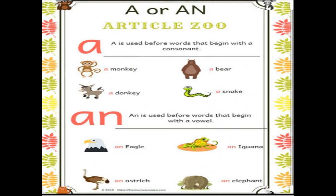A is used before words that begin with a consonant — means jis spelling ka pehla letter consonant ho, usse pehle hum A lagate hain. For example, 'monkey' ka pehla letter M hai, aur M consonant hai, isliye usse pehle hum A lagaenge — a monkey. Isi tarah, beer, donkey, and snack ki spelling ka pehla letter consonant hai, isliye usse pehle bhi hum A lagaenge: a bear, a donkey, and a snack.